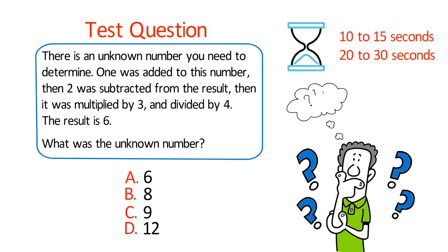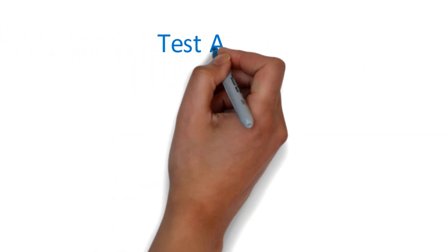The best way to solve these types of challenges is to reverse the calculation by solving the problem backwards. Multiply six by four, then divide by three, add two, and subtract one. The result is nine. Let's verify: (9 + 1 - 2) × 3 ÷ 4 = 6. Correct! So the correct choice is C: nine.